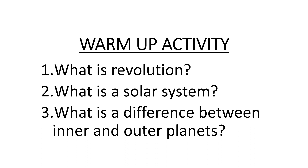I hope you wrote down your answers. Let's check them. Question one: revolution means when the Earth completes one rotation, or when the Earth revolves around the sun - that is called a revolution. The solar system is everything that moves around the sun. Number three: the difference between inner and outer planets - inner planets are made of stone or sand, and outer planets are made of gases or ice.